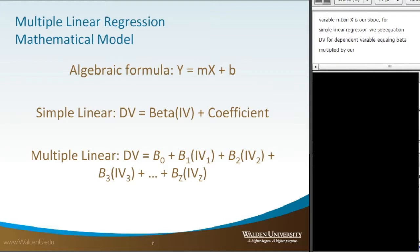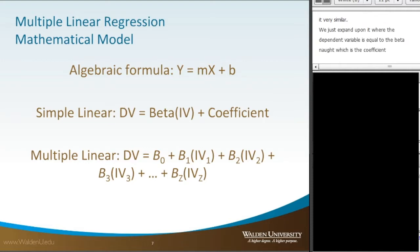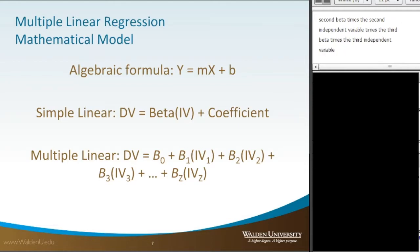For multiple linear regression, we write it very similarly but expand upon it. The dependent variable equals beta-naught (the coefficient), plus beta-one times the first independent variable, plus beta-two times the second independent variable, plus beta-three times the third independent variable, continuing out until all independent variables are included — symbolized as b-sub-z times the independent variable z.